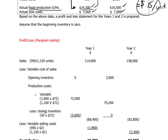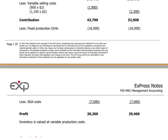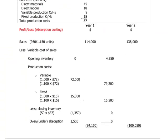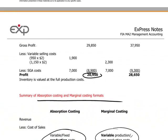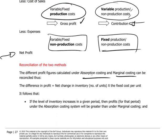Under the profit and loss for year one using the marginal costing method, we had a profit result of $20,200. For year one using the absorption costing method, the profit came out higher at $20,950. So the marginal costing result was $20,200 and the absorption costing was $20,950.